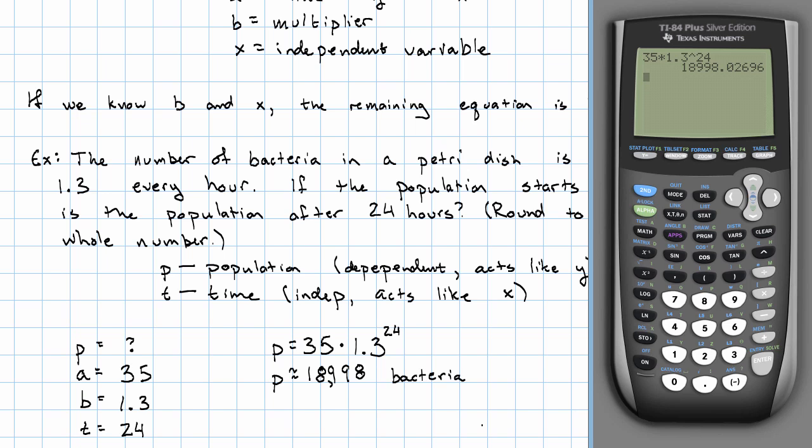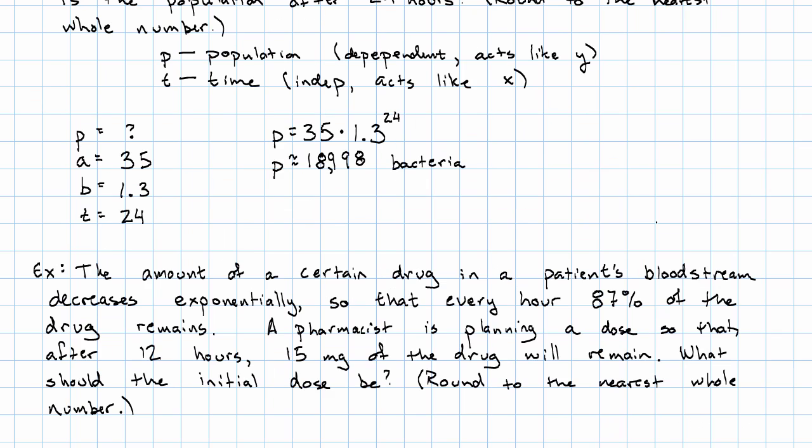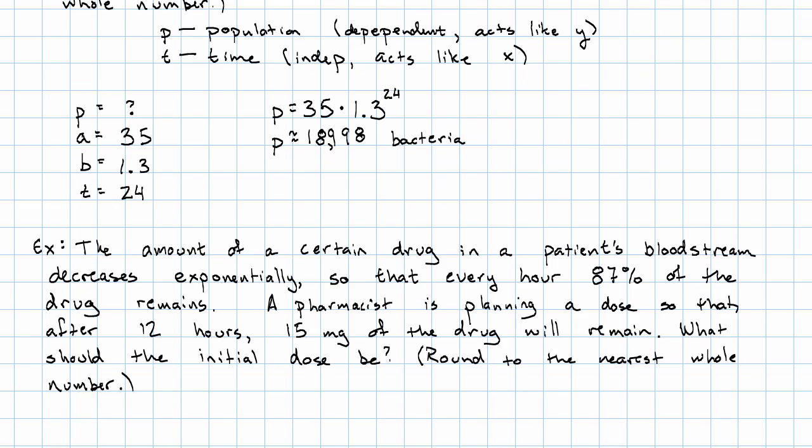We might also have a story where we need to figure out the starting value. Suppose the amount of a certain drug in the patient's bloodstream decreases exponentially, so that every hour, 87% of the drug remains. A pharmacist is planning a dose so that after 12 hours, 15 milligrams of the drug will remain. What should the initial dose be?